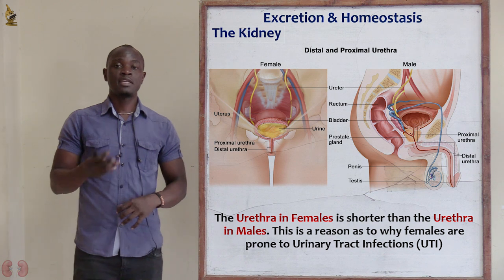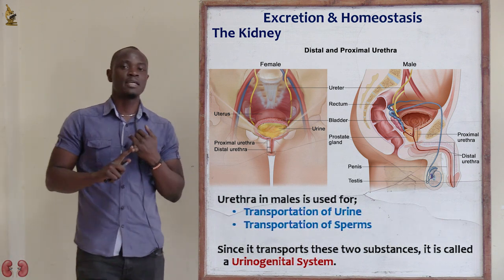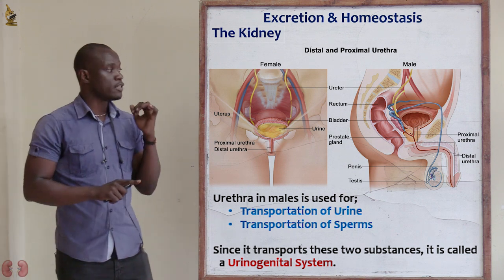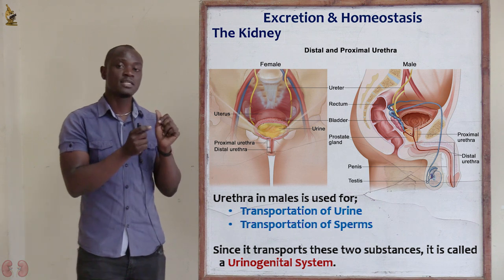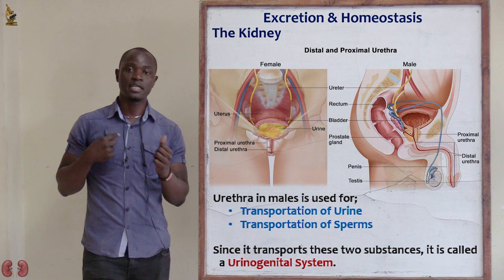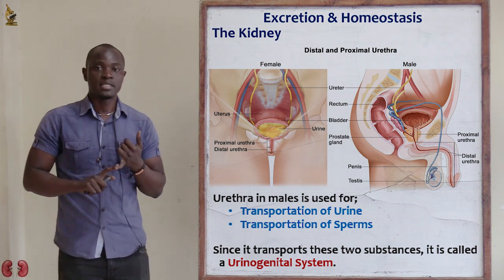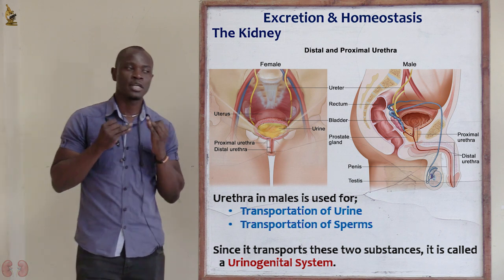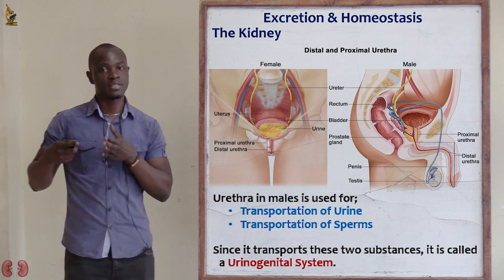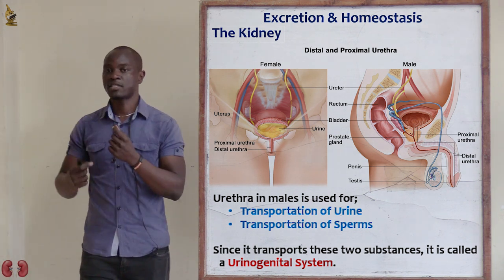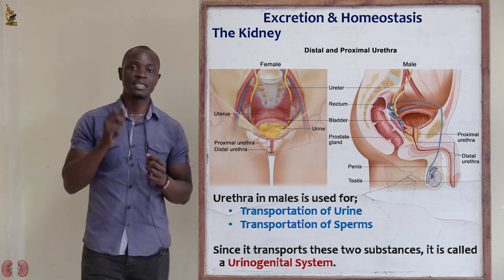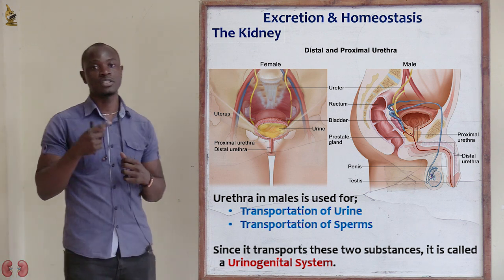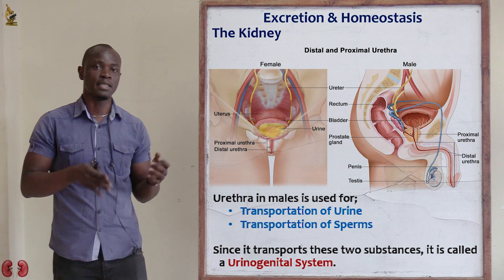In males, the urethra serves two functions: first, to transport urine from the urinary bladder; and second, to transport sperm from the testes — that is, to transport male gametes into the surrounding. Since the urethra in males is used for both transportation of urine and transportation of sperm, it is referred to as a urinogenital system, as it serves two main substances or products in the male body.